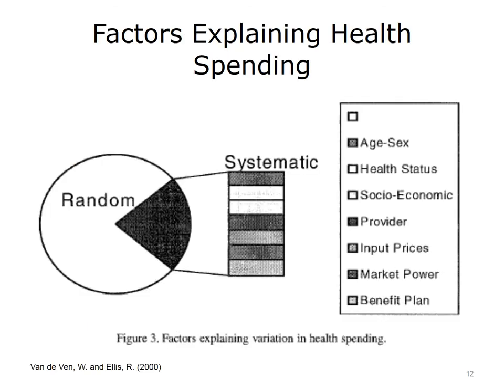For health spending, the diagram from Van de Ven and Ellis' book on risk adjustment suggests that most of the variation in healthcare expenditures is random and cannot be explained by systematic features. The chart lists different types of factors that could be included in risk adjustment, such as age and sex, health status, socioeconomic, provider, input prices, market power, and benefit plan. The last three apply more directly to health spending than the other outcomes do.